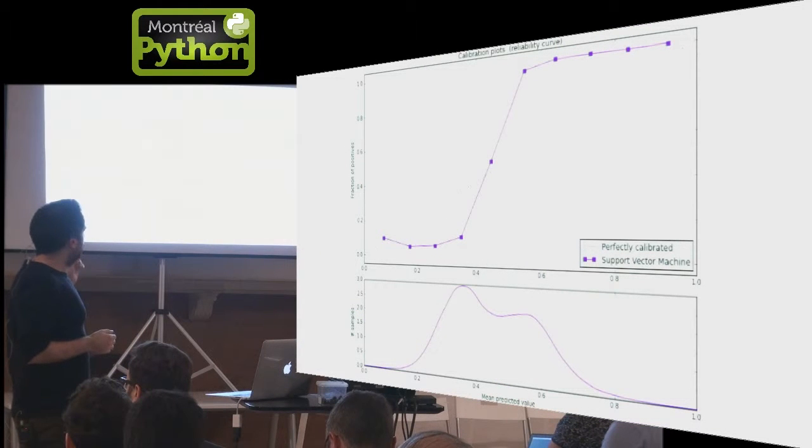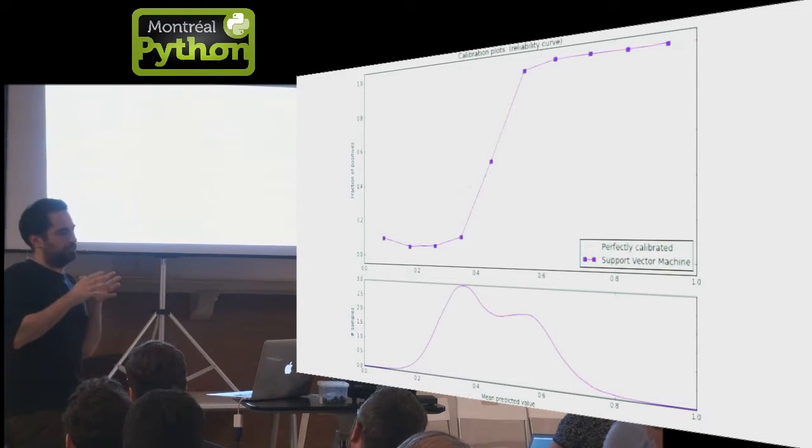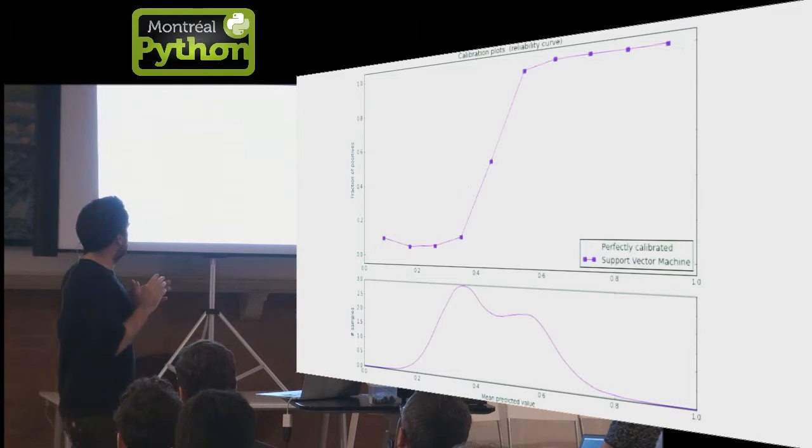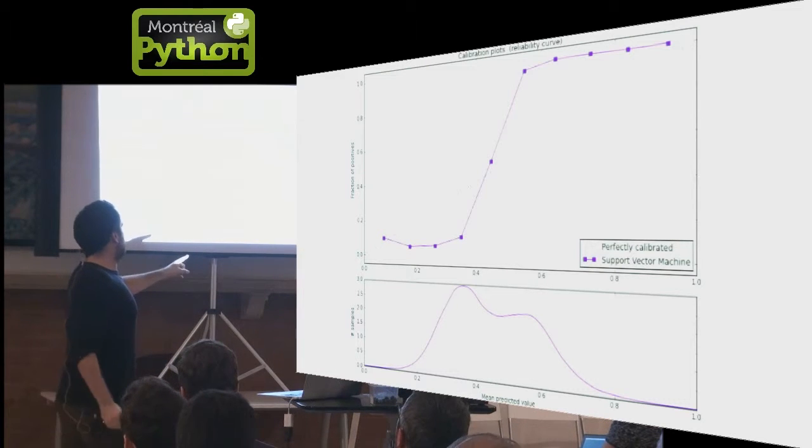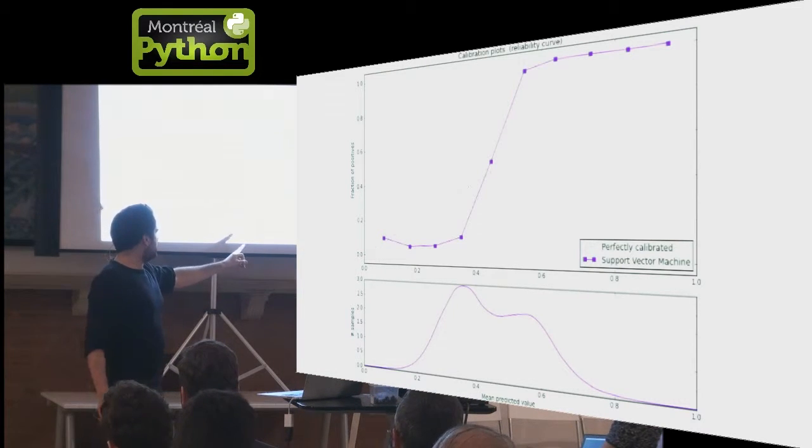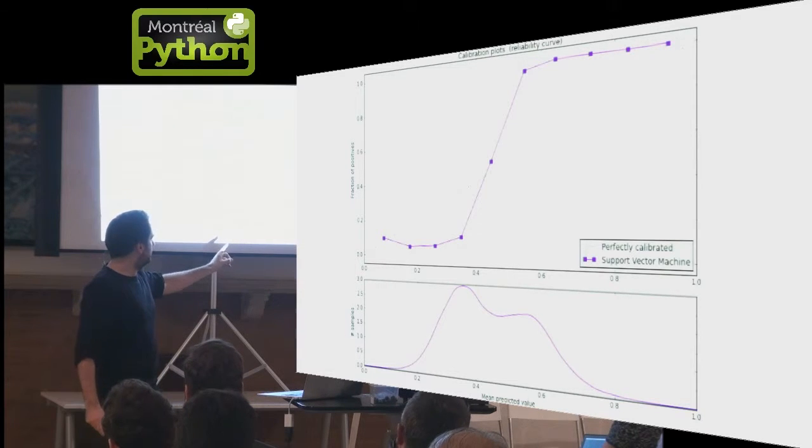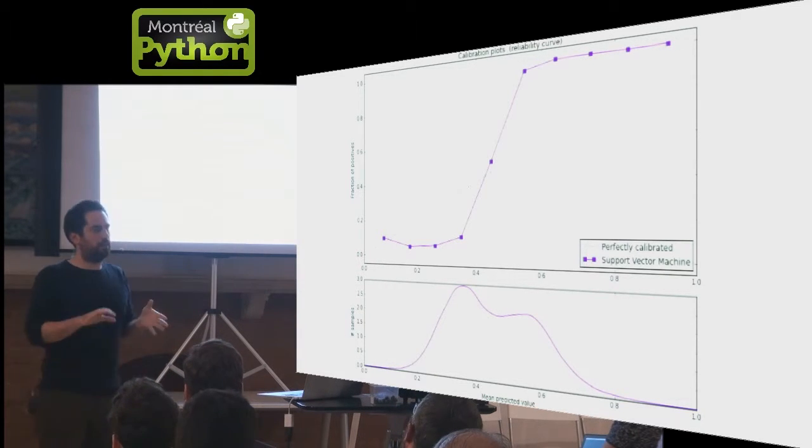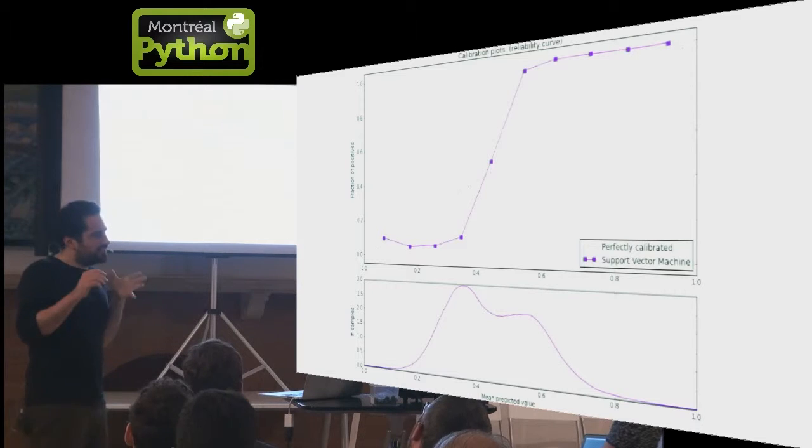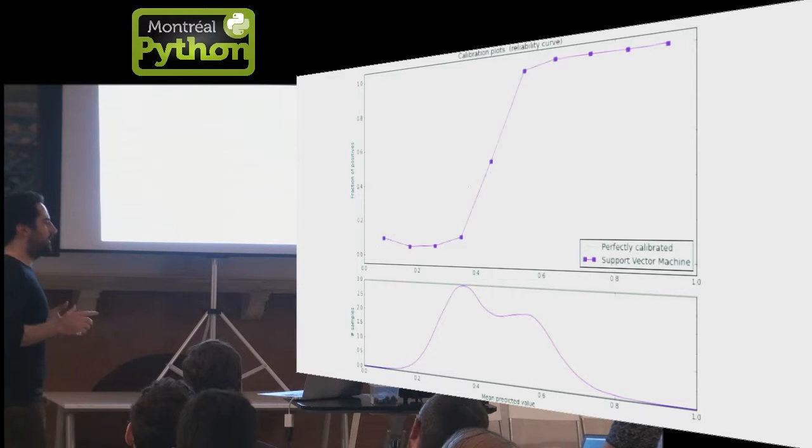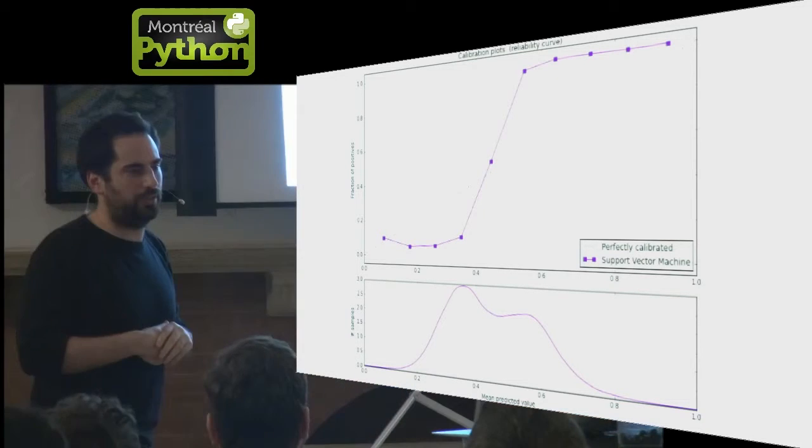Here, this is a support vector machine, a linear model that tries to focus on samples that are hard to classify. You can see that for most of the predictions it makes, they are close to 0.5, so it's not very confident. Because it's trying to focus on the hard cases, and therefore is not very confident of its own classifications.